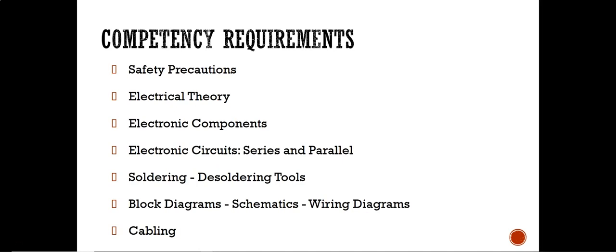Here are the competency requirements that are part of the five modules. Safety procedures covers first aid concepts and their importance to workers in the electric and electronics field. Electrical theory covers atomic structure, components of atoms, their charges, and importance to electronics technology. Electronic components covers identifying different types of capacitors, their uses, and readings. Electronic circuits series and parallel covers solving RLC circuits and star or delta connections.